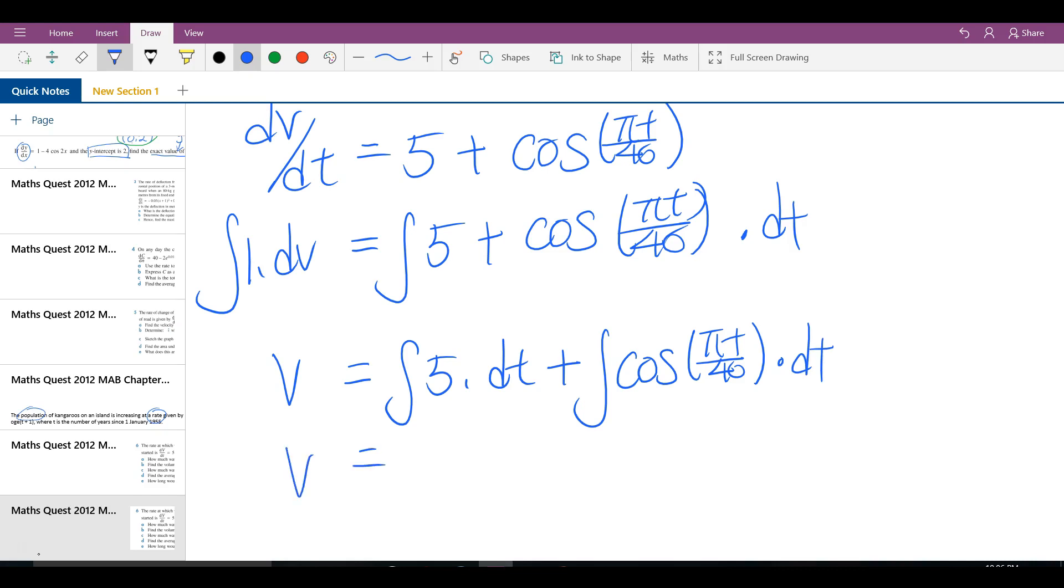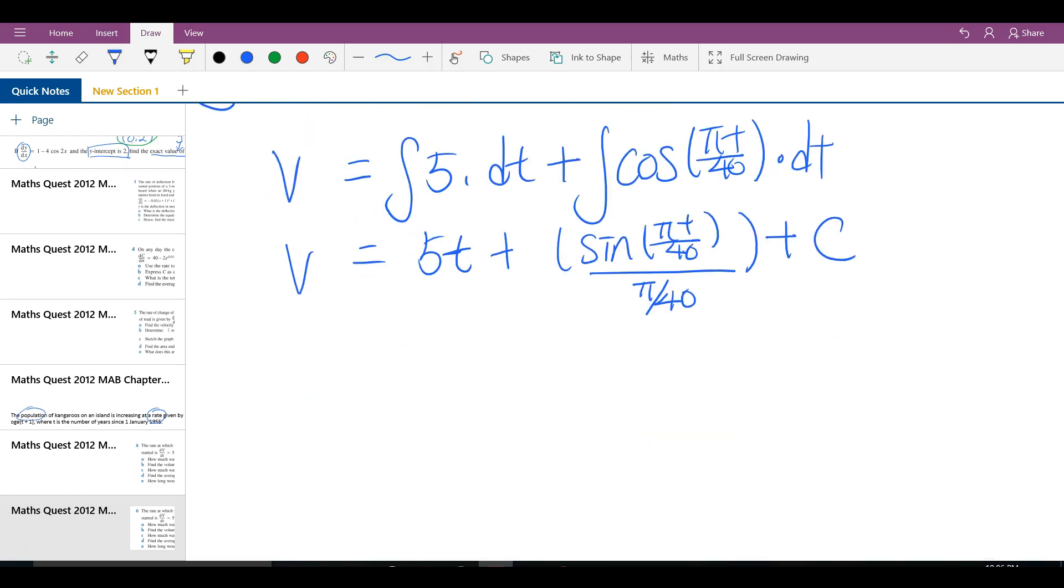So we know that when you integrate the constant with a variable, you get V. And we can just separate this. It's plus cos pi T over 40 dT. Now the 5 is easy, it's the constant. We just put the variable next to it. This is 5T. Plus this. Now when you integrate cos, cosine, you get sine. The bracket doesn't change. And then we have to divide it by the derivative of the brackets. So it was inside, divide the derivative of the inside. And then plus C. Don't forget the plus C.